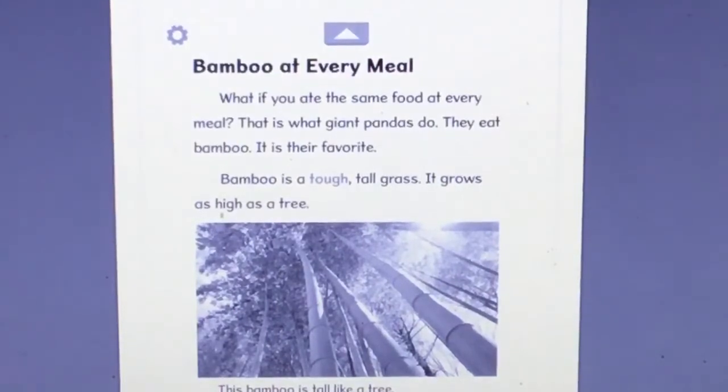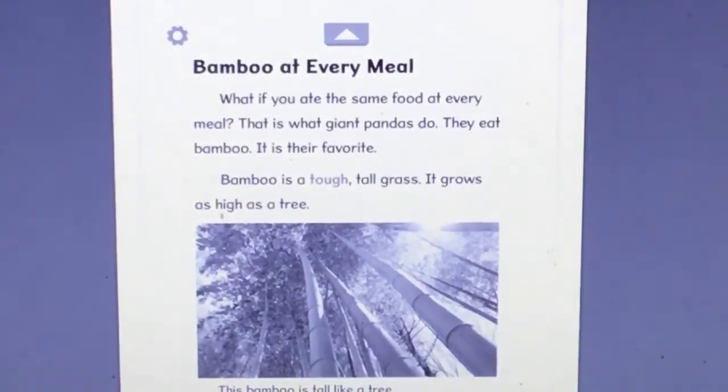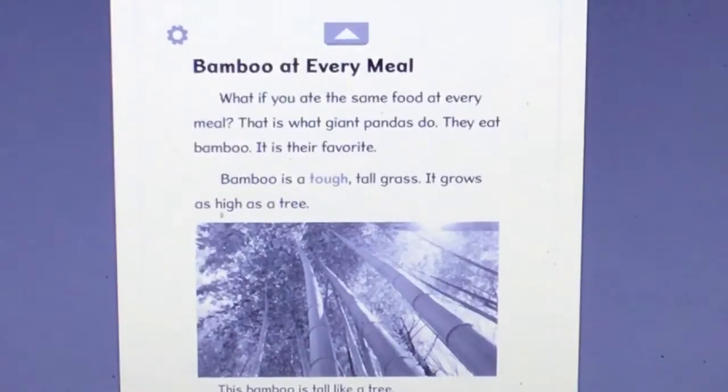Bamboo at every meal. What if you ate the same food at every meal? That is what giant pandas do. They eat bamboo. It is their favorite. Bamboo is a tough, tall grass. It grows as high as a tree. This bamboo is tall like a tree.